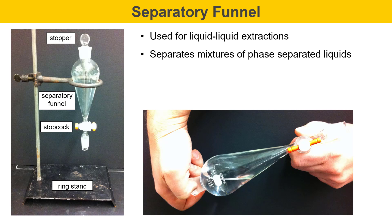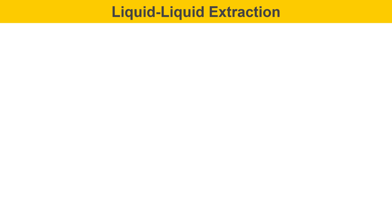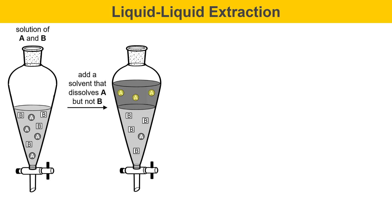The separatory funnel separates mixtures of phase-separated liquids — think of a two-phase mixture like oil and water. To separate the liquids, you drain the bottom layer out the bottom, and best practice is to pour the top layer out the top of the separatory funnel. For a liquid-liquid extraction, imagine you have a solution of two molecules A and B dissolved in a solvent inside the separatory funnel. You add a solvent that dissolves molecule A but not molecule B, and it must be immiscible with the existing solvent so it forms a separate layer. When you shake the separatory funnel, the A molecules migrate preferentially into the new solvent. There may still be a little A left in the lower layer, but mostly the upper phase contains A and the lower phase contains B.